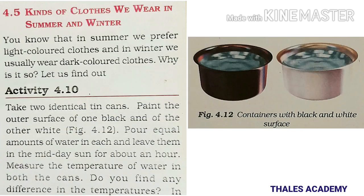Let us think about the kinds of clothes we wear in summer and winter. In summer we prefer light-colored clothes and in winter we usually wear dark-colored clothes. Why is it so? Let us find out. Take two identical tin cans — paint the outer surface of one black and the other white.